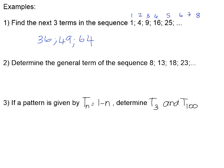Number 2: determine the general term of the sequence 8, 13, 18, 23. First, check whether we add or subtract the same number each time: 8 + 5 = 13, 13 + 5 = 18, 18 + 5 = 23. So I need multiples of 5. 5 times 1 is not 8 — we need to add 3 to get 8. Checking position 2: 2 × 5 = 10, plus 3 is 13. The formula works, so the general term is TN = 5N + 3.